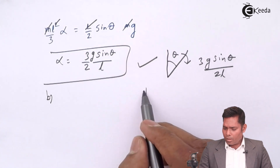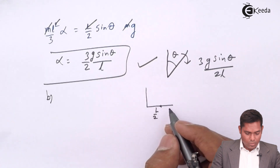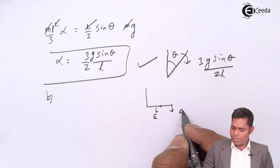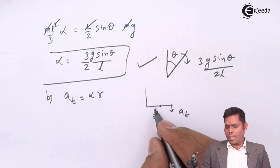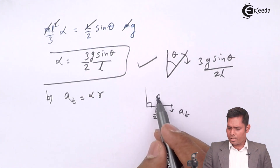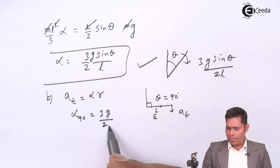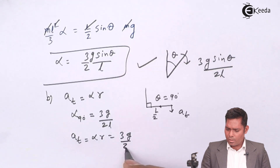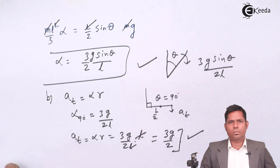For the second part, from vertical to horizontal position, at the horizontal position the angle is 90 degrees. Substituting theta equals 90 into the general equation, alpha equals 3G over 2L. Tangential acceleration equals alpha times r, where r equals L. So L cancels and the tangential acceleration of the free end is 3G over 2. Thank you.